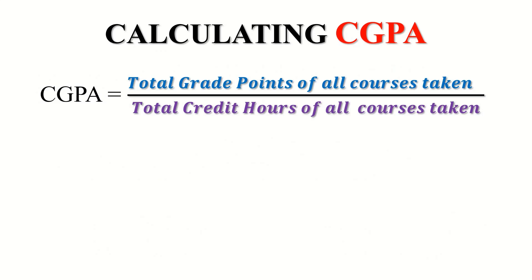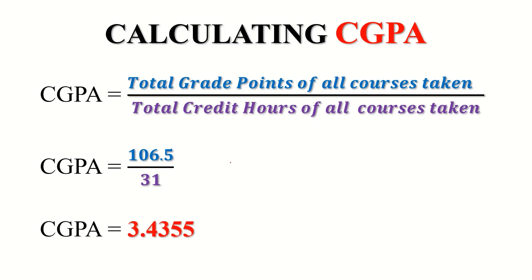Now we substitute into the CGPA formula: Total Grade Points of all courses taken ÷ Total Credit Hours of all courses taken. The total grade points for Level 100 first and second semester was 106.5, and the total credit hours was 31. Dividing 106.5 by 31 gives us 3.4355, so the CGPA for this person in Level 100 is 3.4355.